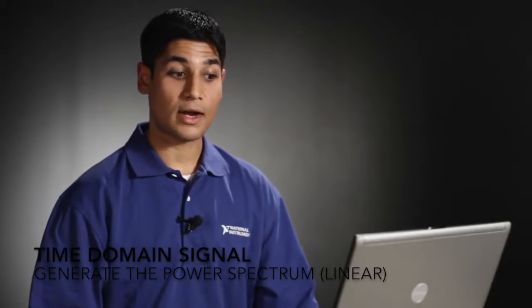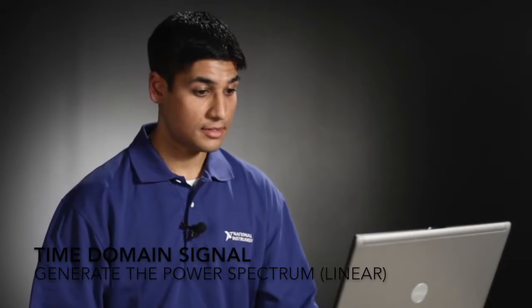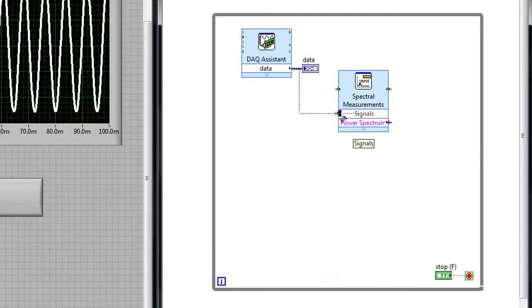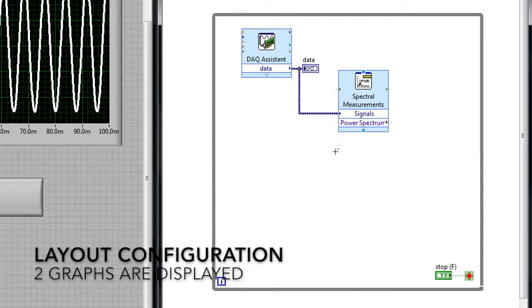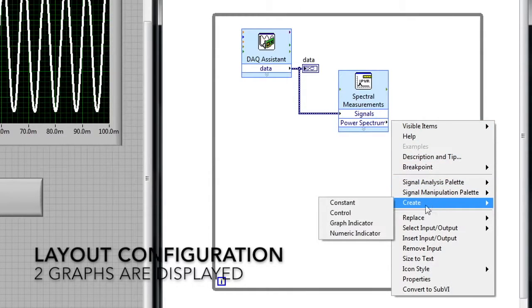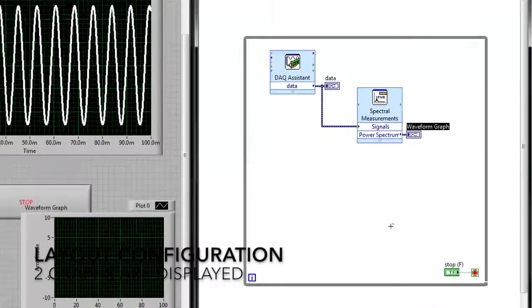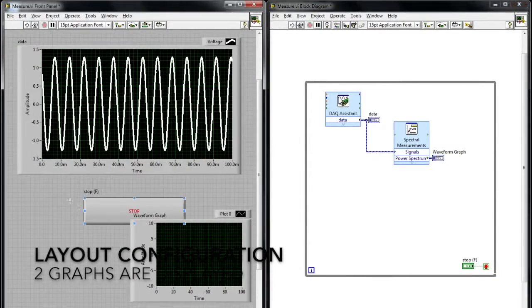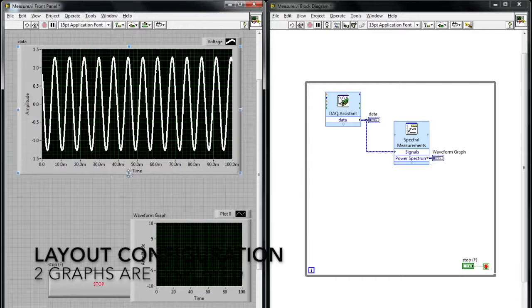Now it's just a question of wiring the data that's coming out of my DAQ assistant directly to the input terminal of the spectral measurements VI. I can right click on the output of the power spectrum and choose to create a graph indicator. Once I do that, you can see on the front panel I've got a graph that's been generated.